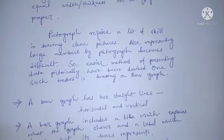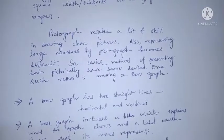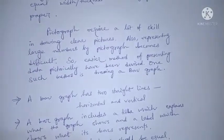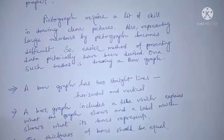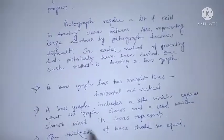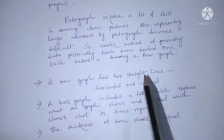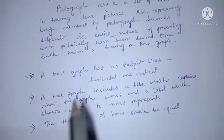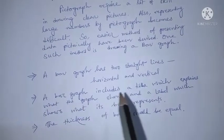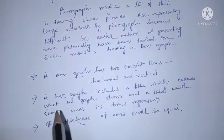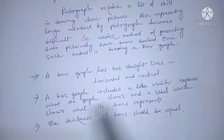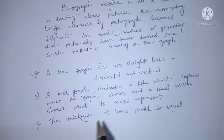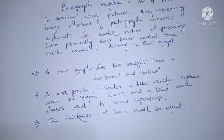You can show a large amount of information in a very short way and within a very short time. A bar graph has two straight lines — one horizontal and one vertical. It includes a title explaining what the bar graph shows and labels showing what the bars represent. The width of bars should be equal.